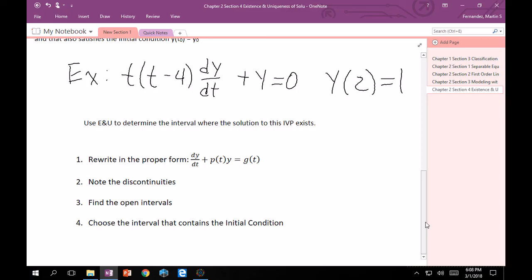Note the discontinuities in p(t) and g(t). Find the open intervals, the possible open intervals, and then choose the interval that contains your initial condition.